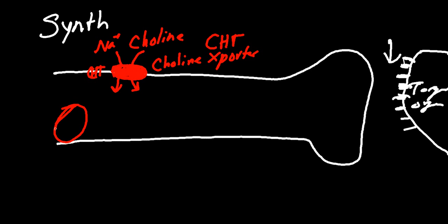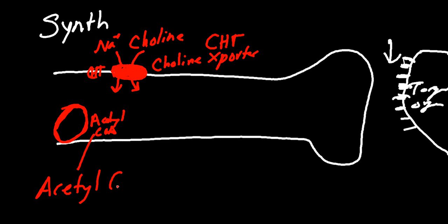We've got mitochondria within our cell. Our nerve axon is just a process off of our cell, and the closer we get down toward the terminal, the more concentrated our mitochondria get. In the mitochondria, we're going to create acetyl-CoA. That acetyl-CoA is going to combine with our choline and form our ACh.